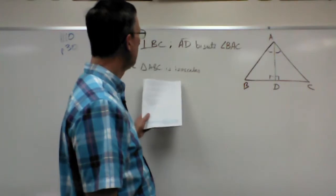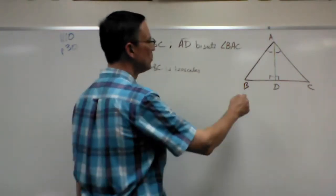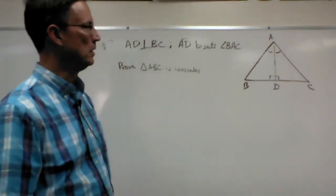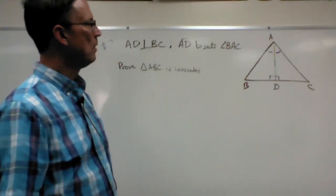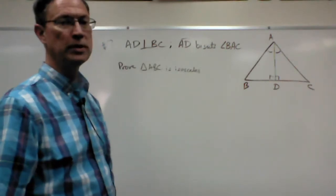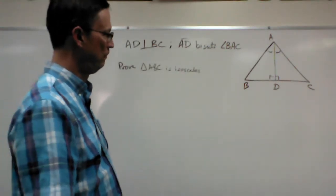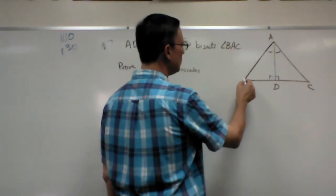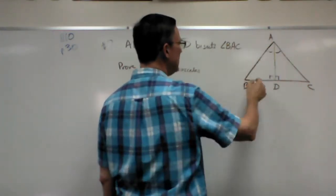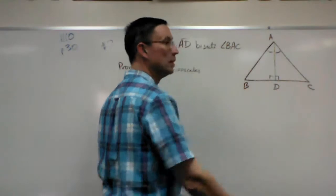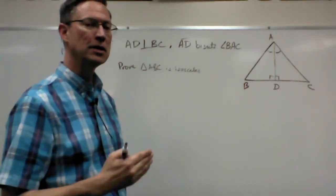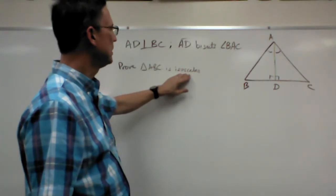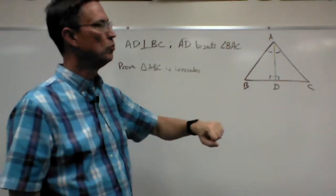They want us to prove that this big triangle ABC is isosceles. Now for it to be isosceles by definition, two sides have to be the same length. So it looks like I'm actually going to try to prove that maybe AB is congruent to AC. So you kind of see where we're headed with that? For this to be isosceles, we have to have two congruent sides.